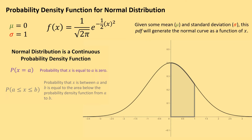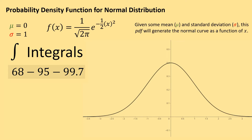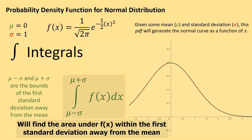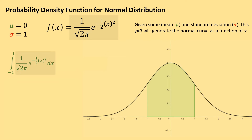So how do I find the area underneath a curve? If you've taken calculus, you've learned about integrals. We can use integrals to calculate the area underneath this curve. Thinking back to the 68-95-99.7 rule, I can use integrals to calculate the percent of our distribution that exists between two numbers. To find the percent within one standard deviation of the mean — since mean is zero and SD is one — I integrate from negative one to one of our probability density function with respect to x.